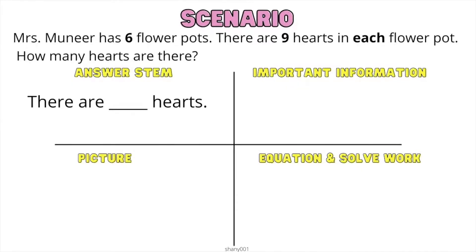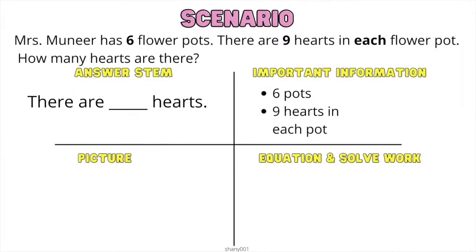The answer stem restates the question. Let's go ahead and read the question: How many hearts are there? Our answer stem is, there are blank hearts. The key information is, there are six flower pots and there are nine hearts in each pot.